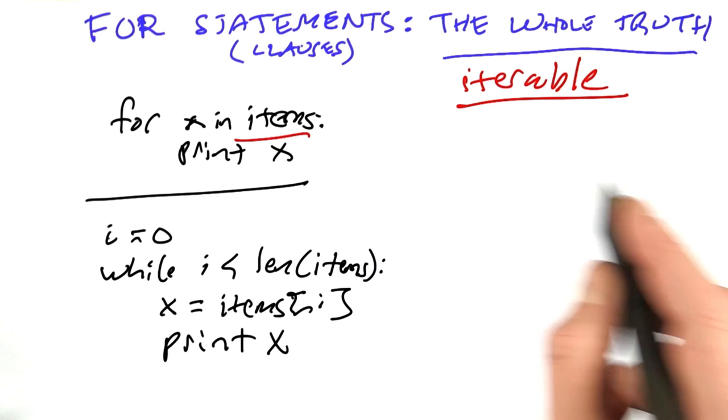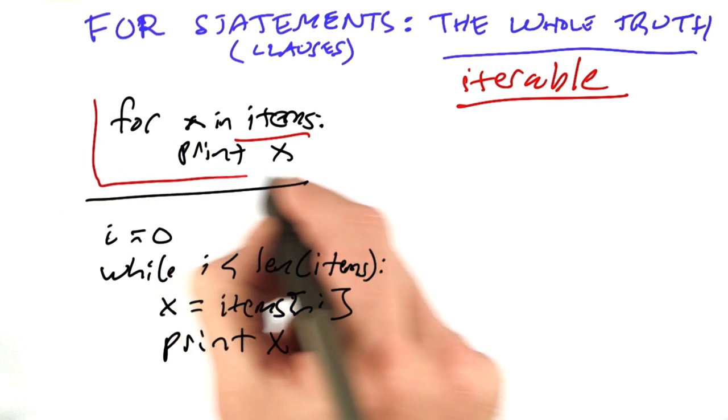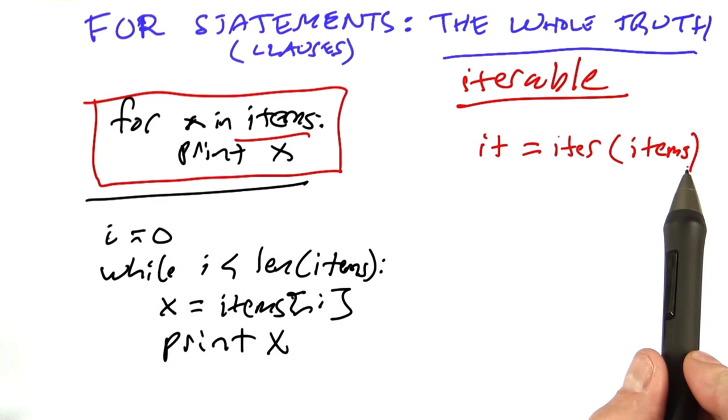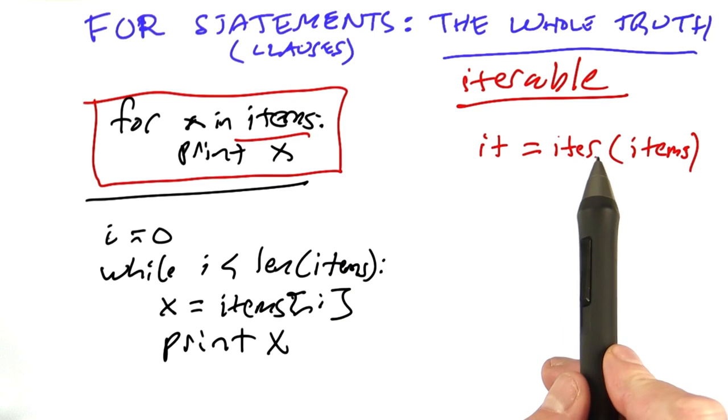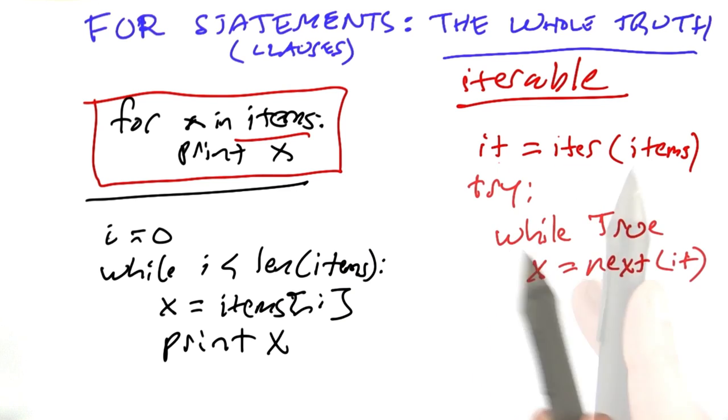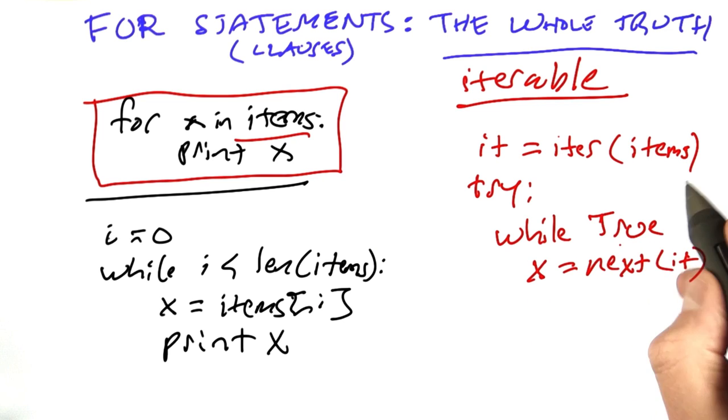And what actually happens when we implement this piece of code, it's as if we had written this code. So first we take the items and we make an iterator from them by calling the built-in function iter, and I'm going to call that it. And then we're going to have a while loop that goes forever.